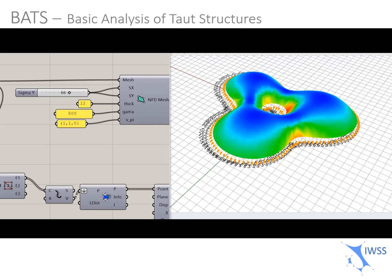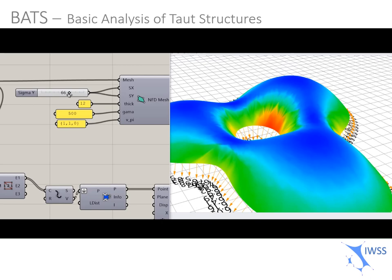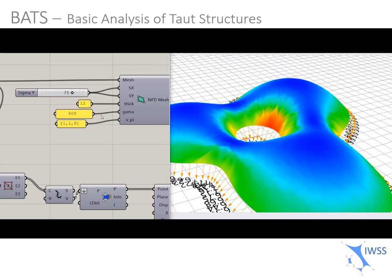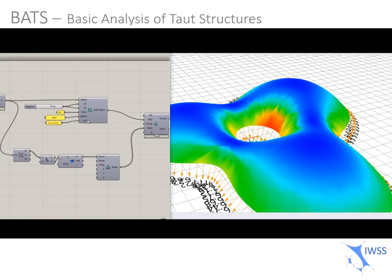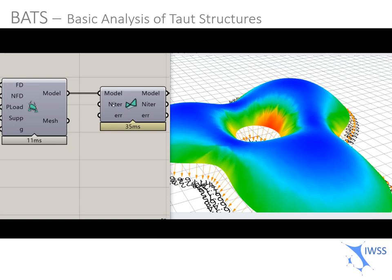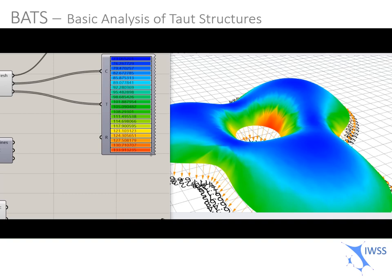Finally, here you can see an application for funicular shape-finding. You can state the stress of the structure. You can define the weight of the structure by determining the density in the gamma parameter. As you can see, in these types of form-findings, the solution should not converge because we are defining a non-zero force vector. But we will retrieve a funicular shape with a known uniform stress state.